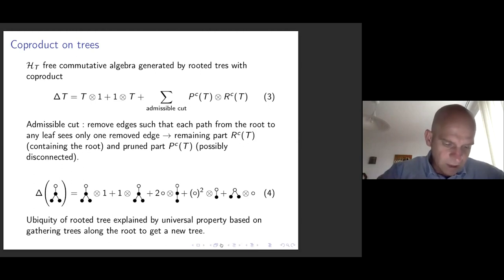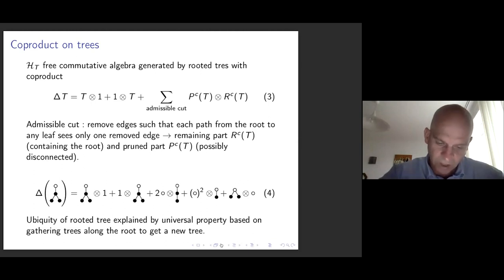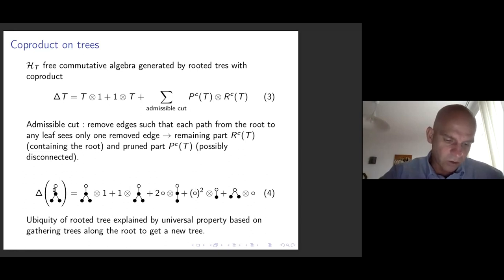If I take an example: the coproduct of a given rooted tree is the tree tensor 1 plus 1 tensor the tree. If you cut any of the two edges just above the two leaves, you get the first term. You can also cut both of them separately, giving the square of the single-vertex tree times the two-vertex tree. You can also cut the edge just below the root. You don't cut two edges like the edges above and the edge below simultaneously, because that would not be an admissible cut.